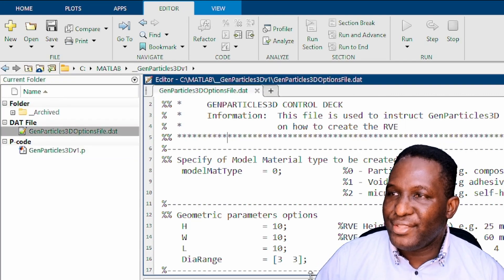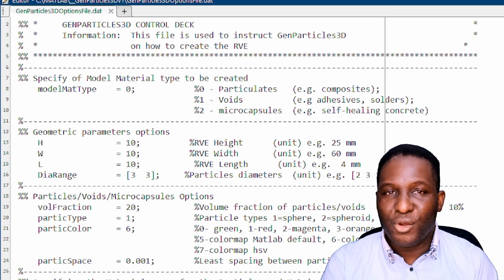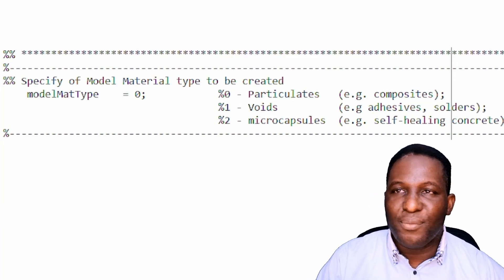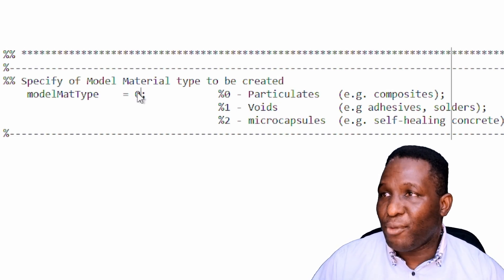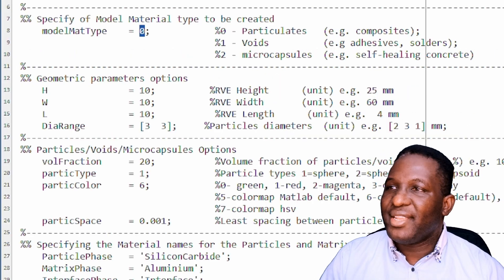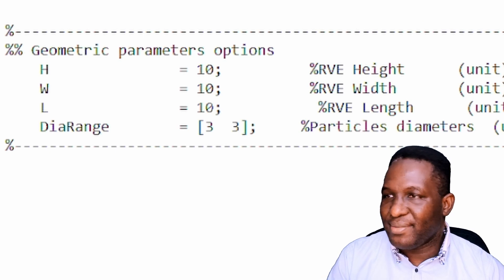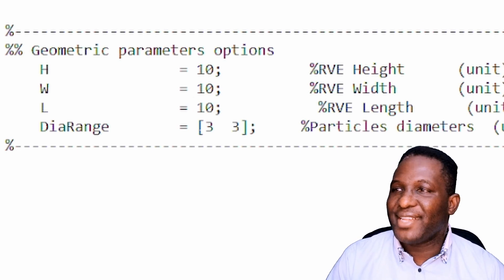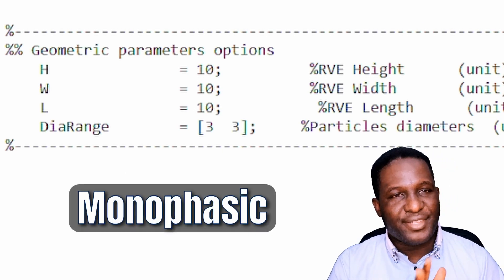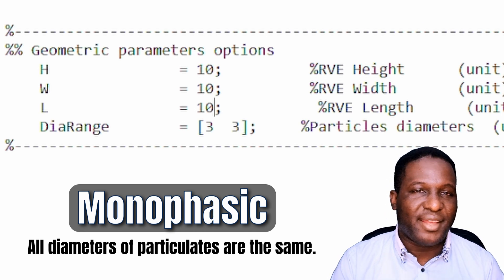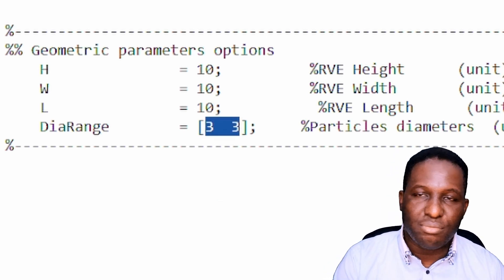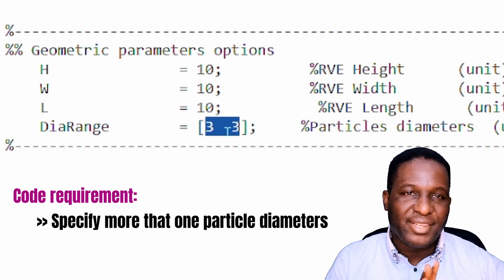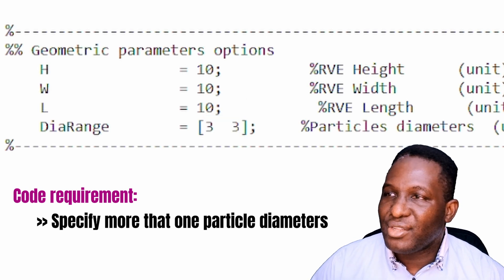This is a computational control deck that controls what's going on with the system. You can create particulate composites, voids, or micro-capsules like for self-healing composite concrete. We're going to work on particulate composites, so I'm going to set the model material type for particulate composites to zero. The dimensions we're working with will be 10 by 10 by 10 — in this case microns — so the representative volume element will be 10 × 10 × 10 microns. I'm going to use a monophasic diameter so all particles have the same diameter of 3 microns. The code requires you to specify more than one particle diameter, so we set both to 3.